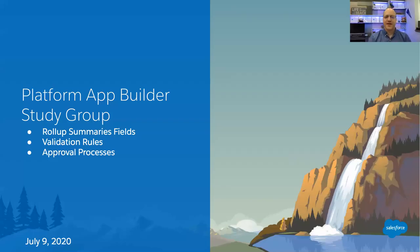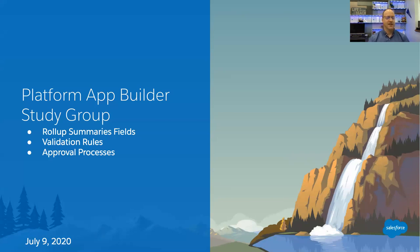Good morning everybody — good afternoon. This is the Platform App Builder study group in Iowa, Kansas City, Omaha, and one in Chicago. Today's topics are roll-up summary fields, validation rules, and approval processes.